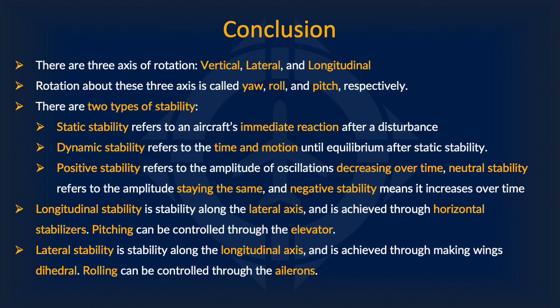Here's a quick recap of what we learned today. There are three axes of rotation: vertical, lateral, and longitudinal. Rotation about these three axes is called yaw, roll, and pitch, respectively. There are two types of stability — static stability refers to an aircraft's immediate reaction after a disturbance, while dynamic stability refers to the time and motion until equilibrium after static stability. Positive stability means oscillation amplitude decreases over time; neutral stability means it stays the same; negative stability means it increases. Longitudinal stability is stability along the lateral axes, achieved through horizontal stabilizers, and pitching is controlled through the elevator. Lateral stability is stability along the longitudinal axes, achieved through dihedral wings, and rolling is controlled through the ailerons.